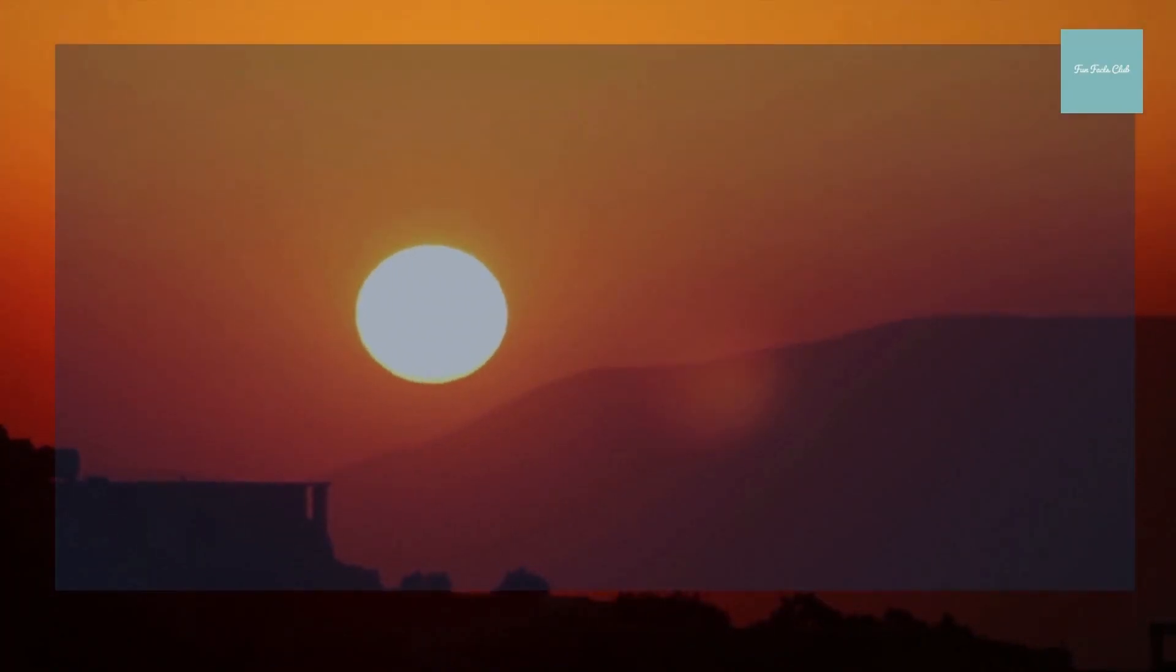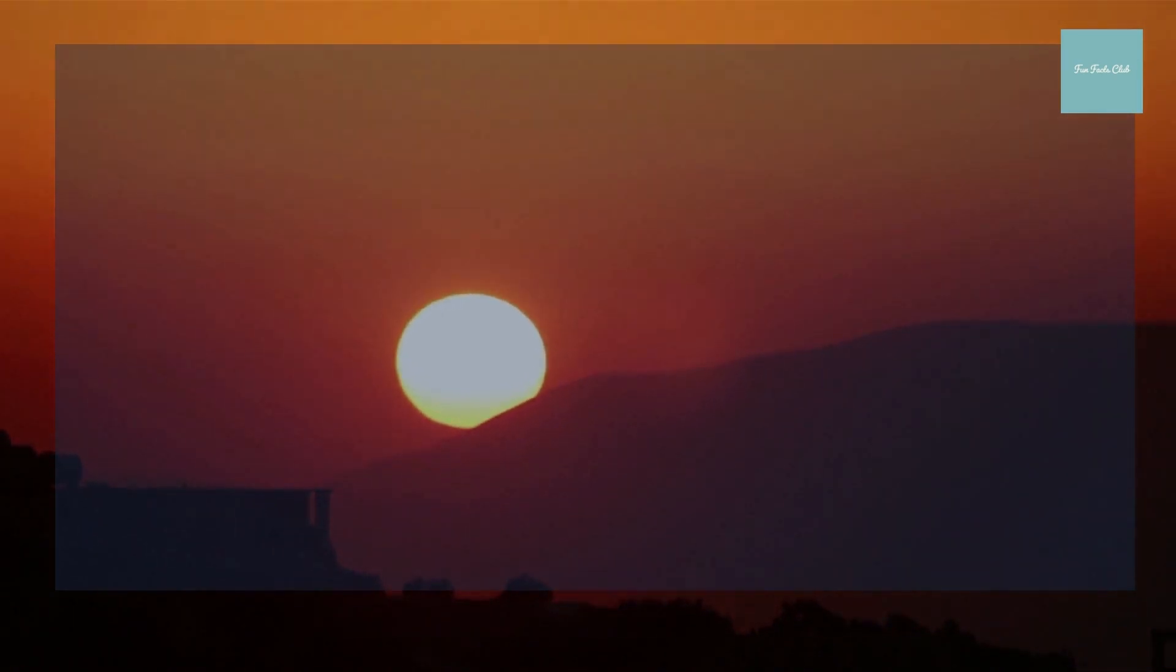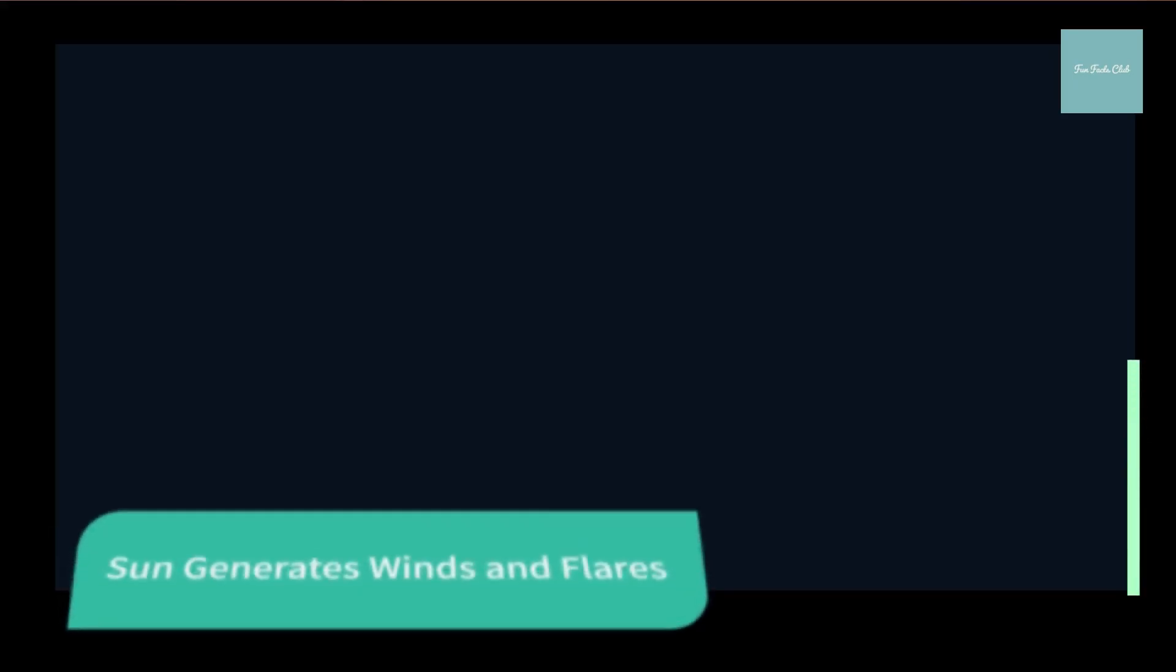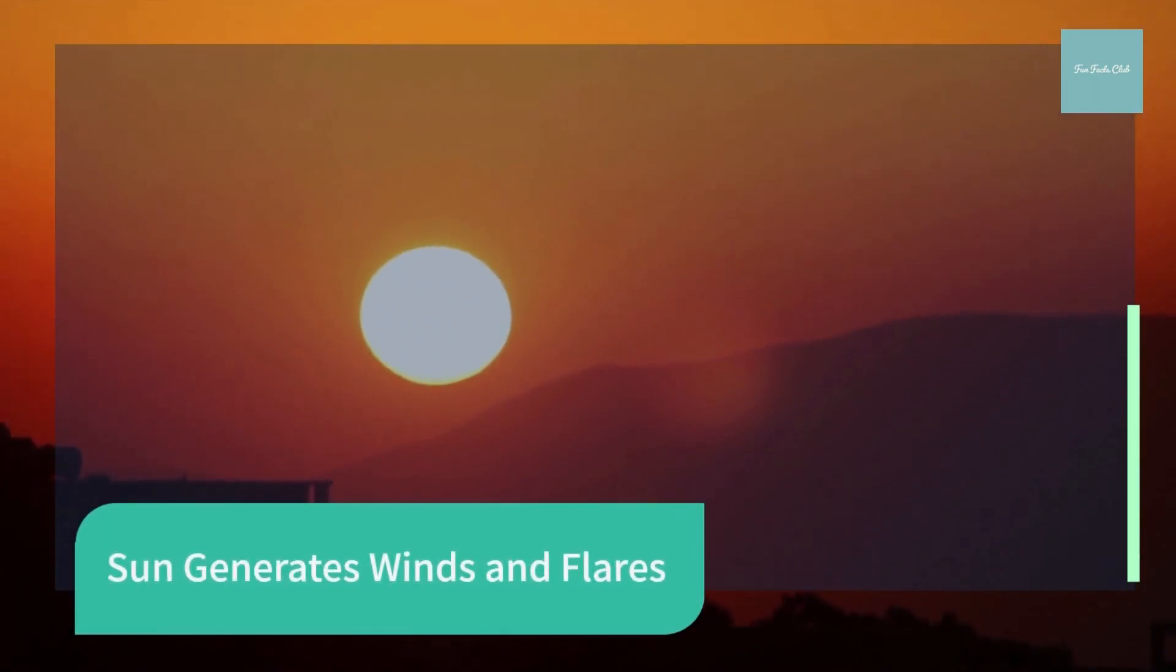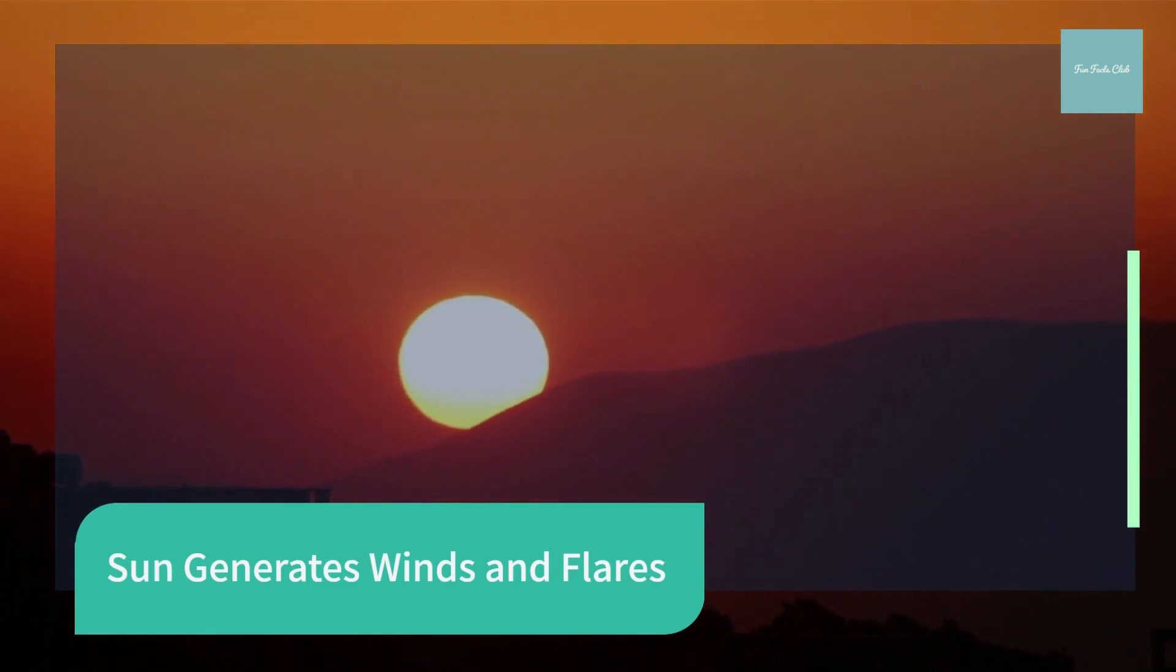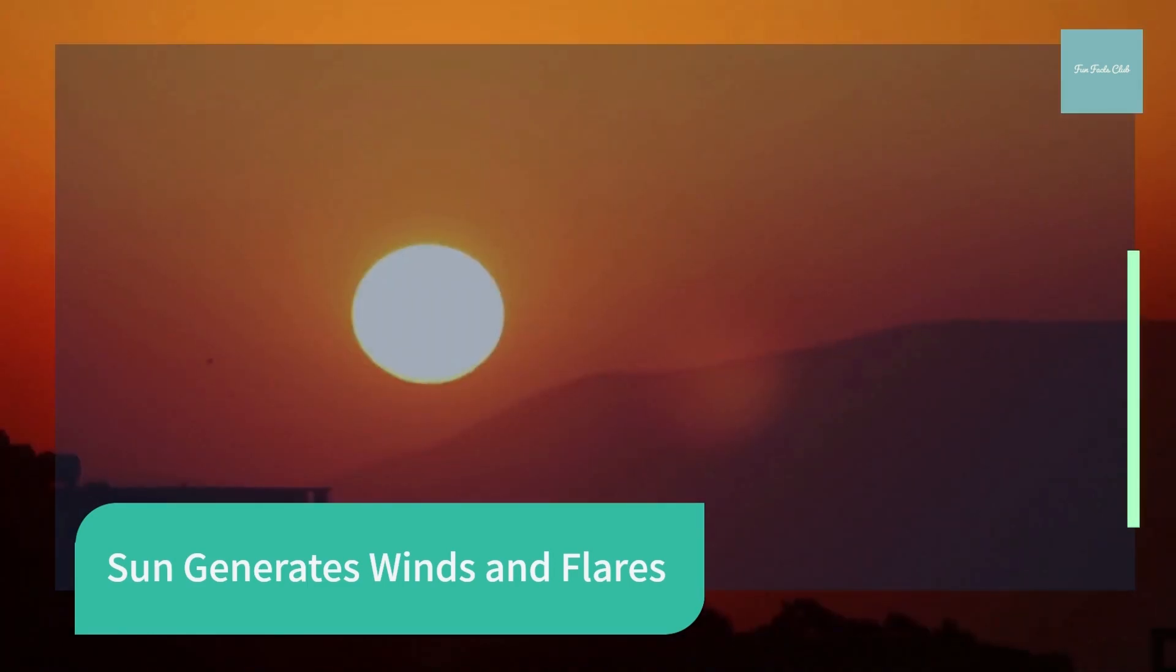The Sun generates roughly 386 billion-billion megawatts of energy through nuclear synthesis as it converts hydrogen into helium. This energy travels outward from the core and is continuously absorbed and re-emitted at progressively lower energy levels and temperatures until it emerges from the surface, where some becomes visible as optical light. Some of the Sun's energy is then radiated as heat, but it also powers a stream of energetic particles better known as the solar wind.